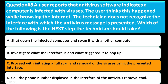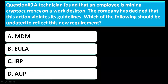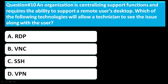Question number nine: A technician found that an employee is mining cryptocurrency on a work desktop. The company has decided that this action violated its guidelines. Which of the following should be updated to reflect this new requirement? Option A is MDM. Option B is ULA. Option C is IRP. Option D is AUP. The correct answer is D, AUP (Acceptable Use Policy).